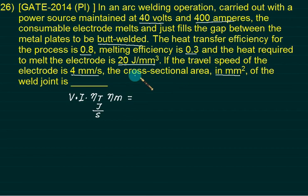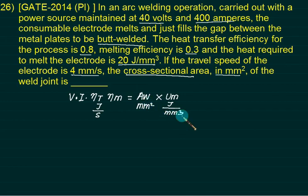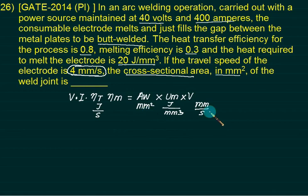You have to solve this problem entirely by dimensional analysis. We want cross-section, represented as AW in mm². To get this value I must multiply by UM first. UM has units of joules per mm³. This gives mm³, but I want mm², so I have to cancel one mm. That gives mm/s, and he has given travel speed in mm per second. So unit balance is achieved and the question is solved.